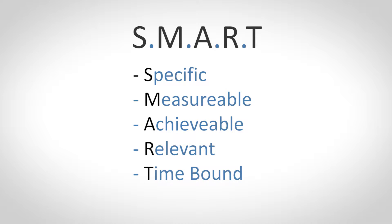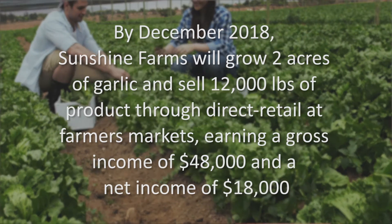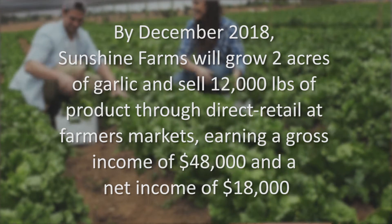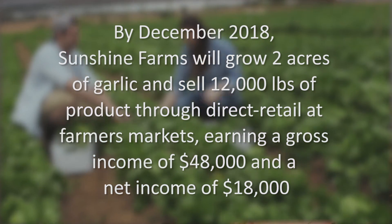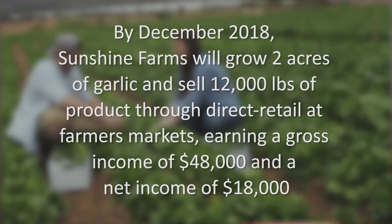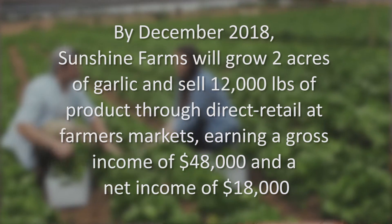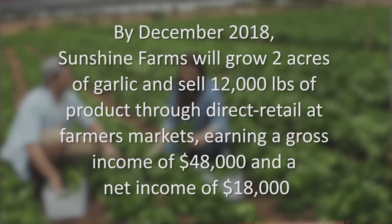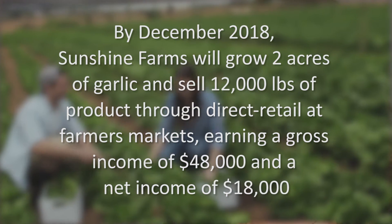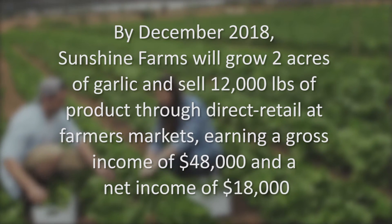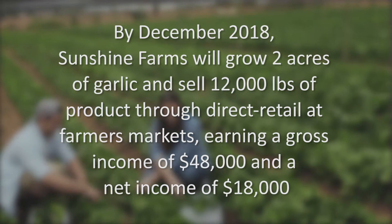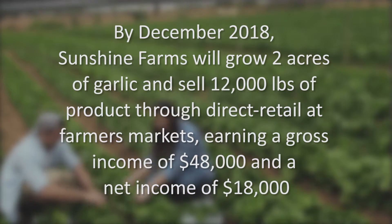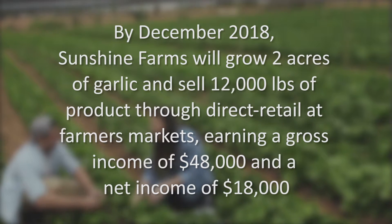Here's an example. By December 2018, Sunshine Farms will grow two acres of garlic and sell 12,000 pounds of product through direct retail at farmers markets, earning a gross income of $48,000 and a net income of $18,000.